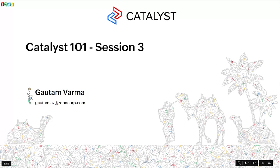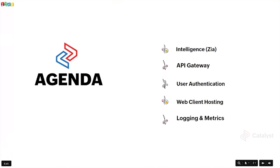Thank you everybody for joining. Welcome to session three of Catalyst 101. I'll quickly walk you through the agenda for today. I'll be giving you an introduction to the intelligence platform, which is the Zia platform as part of Catalyst. We'll then look at how the API gateway functions, and we'll be touching upon user authentication, web client hosting, and logging and metrics.